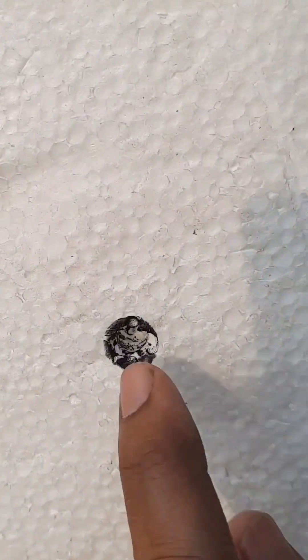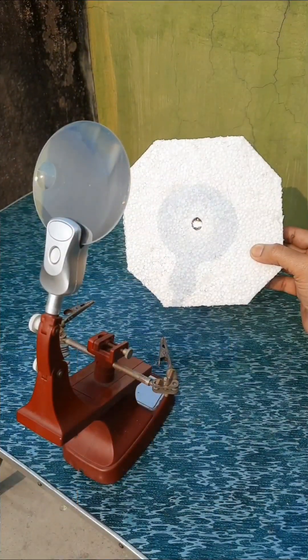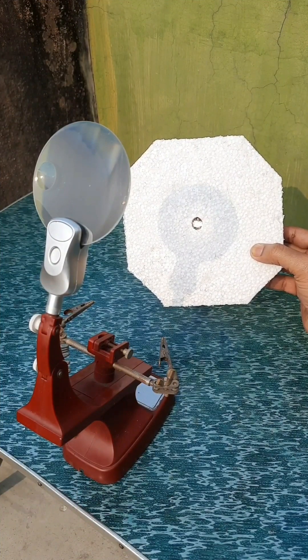So you can see that our thermo has made a hole in it. This is what you know that the black is absorbing heat.